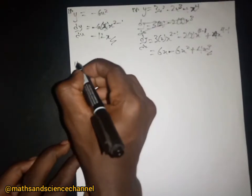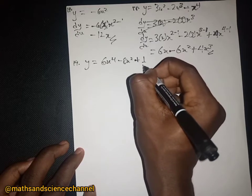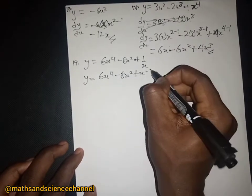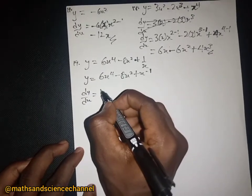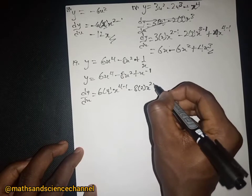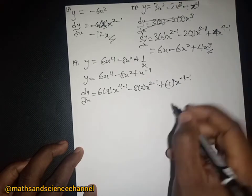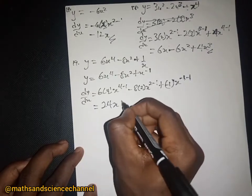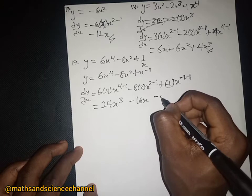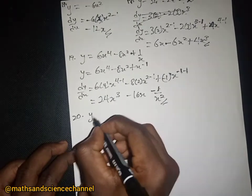Another example: y equal to 6x to the power 4 minus 8x squared plus 1/x. We can write 1/x as x to the power negative 1, so we differentiate: 6 multiplied by 4 gives x to the power 3, 8 multiplied by 2 gives 16x, and negative 1 times x to the power negative 2 — giving 24x cubed minus 16x minus 1 over x squared.